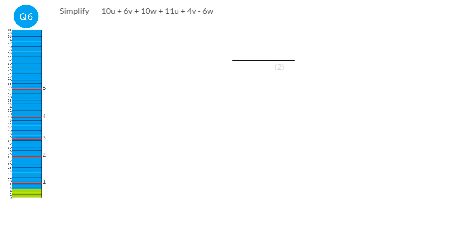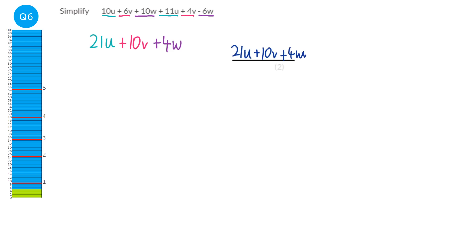This question is all about like terms. We can add ten u with eleven u to make twenty-one u. We can also add six u with plus four v to make ten u. We can also add ten u to minus six u: ten take away six is four u, so plus four u. But we can't add a u term to a v term to a w term, so we have to leave them. Our answer is twenty-one u plus ten u plus ten u plus four u. We can multiply them; we just can't add or subtract unlike terms.